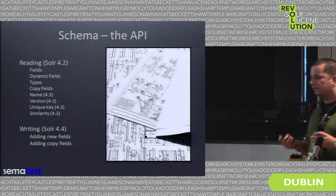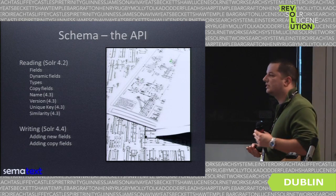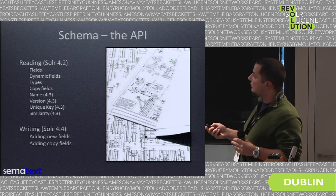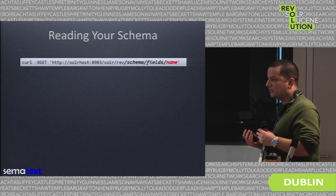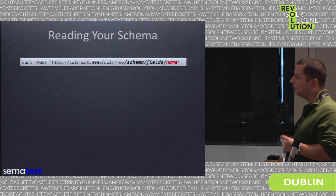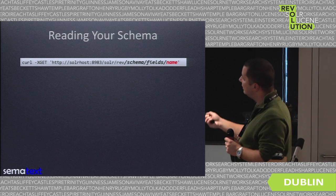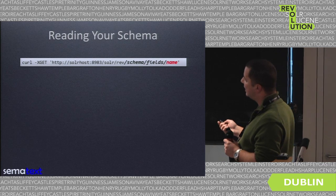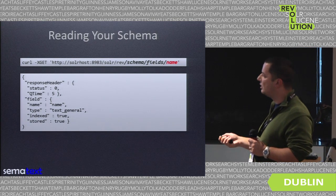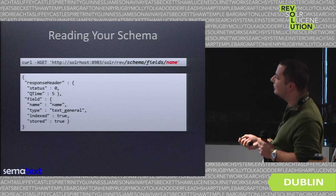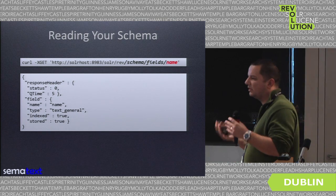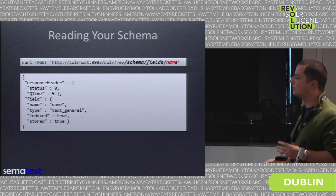With Solr 4.4, we got the ability to actually write the schema — we can add new fields and copy fields. To read the schema, no special configuration is needed. You just point your browser or a request to the proper request handler. In Solr it's called schema fields; you specify the field name and get a JSON response with information about the field — for example its name, type, whether it's indexed, and whether it's stored. This is useful if you are building a UI with a schema wizard.